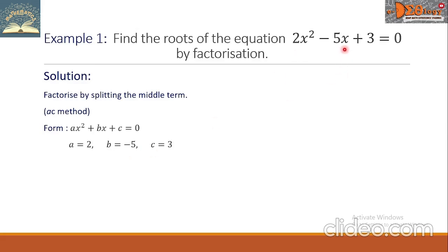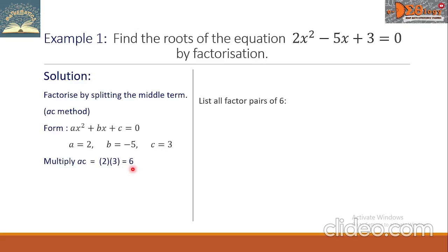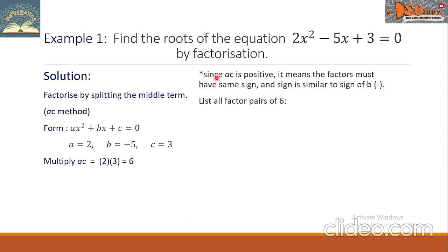Here b is the coefficient of x, which is -5, and c is the constant 3. The first step is to multiply a and c: 2 × 3 = 6. Next we list all factor pairs of 6. Since ac = 6 is positive, the factors must have the same sign, and that sign is the same as the sign of b, which is negative.